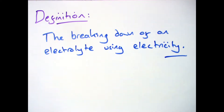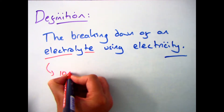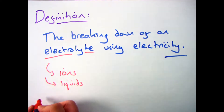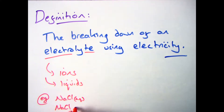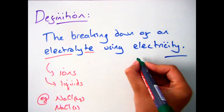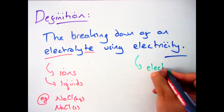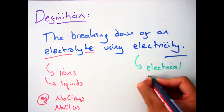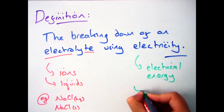An electrolyte is any liquid that contains ions — a good example of that is sodium chloride. As long as it's a liquid, that could be dissolved aqueous or it could be melted. When we say broken down with electricity, we mean electrical energy is used to split that compound back up into its elements.